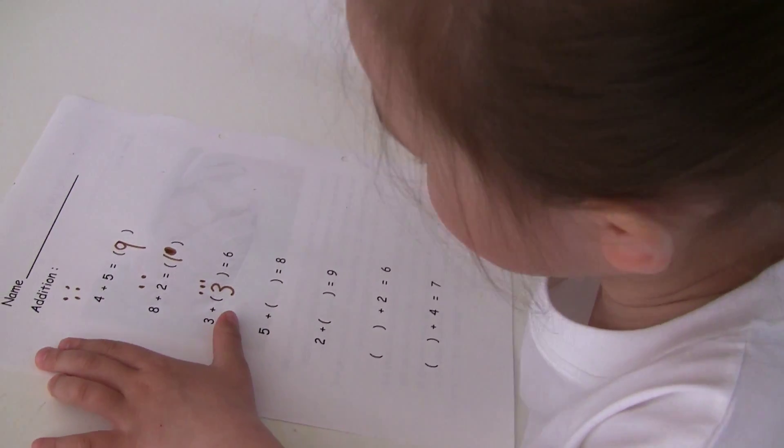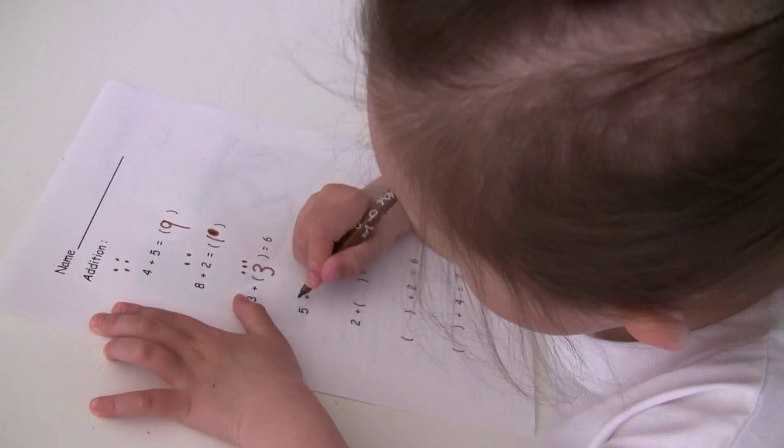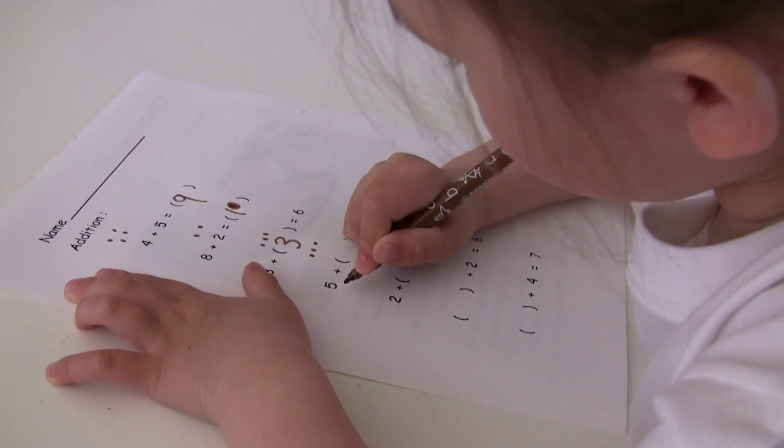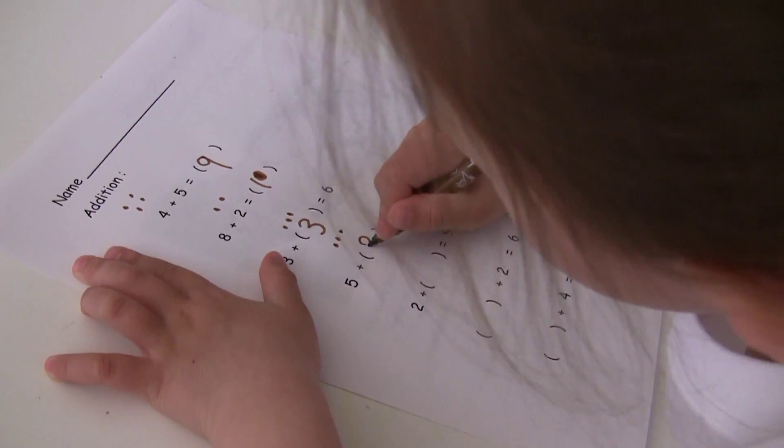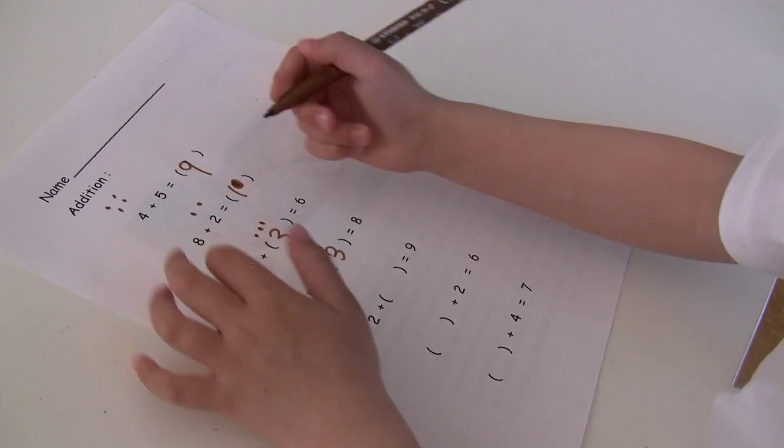5 plus how many equals to 8. Okay. 5, 6, 7, 8. 1, 2, 3. Oh no. 5, 3. Oh no. 2. Okay.